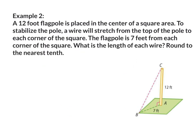Example 2: A 12-foot flagpole is placed in the center of a square area. To stabilize the pole, a wire will stretch from the top of the pole to each corner of the square. The flagpole is 7 feet from each corner. What is the length of each wire? Round to the nearest tenth. The shortest leg is 7 feet, side A. The medium leg is 12 feet, side B. The hypotenuse across from the right angle is side C, which is what we're looking for. The formula is A squared plus B squared equals C squared.